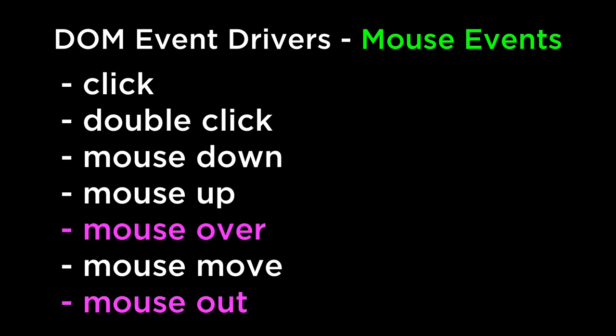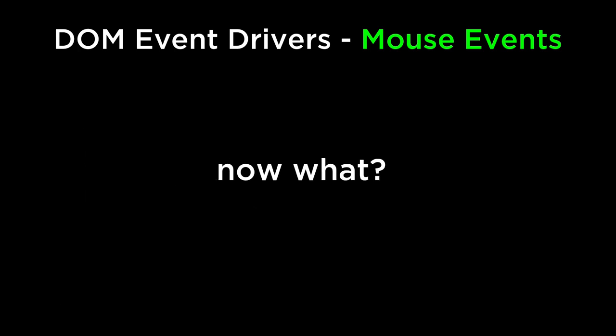To keep things simple, we will only focus on the mouse over and mouse out events, which in the case of the scatterplot chart, we want something to happen when we move the mouse over a point and when we move the mouse away from the point. Now that we know there are DOM events that the browser can detect, we have to define who we want to be listening to those events, as well as what to do when those events happen.